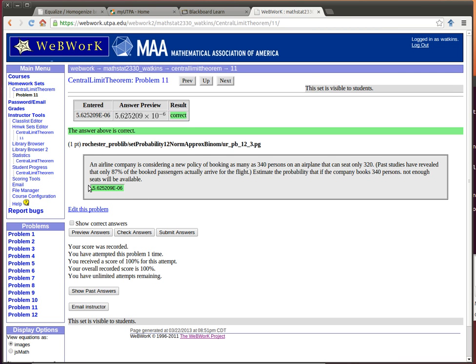Remember that e to the minus 6 means that this decimal place has moved 6 places to the left. So in this case the company is really going to turn out pretty well. There's a very, very small chance that they're actually going to be overbooked when people actually sign up. Hope that helps.